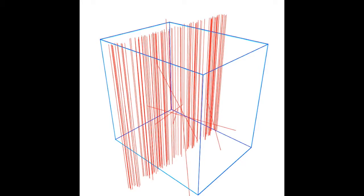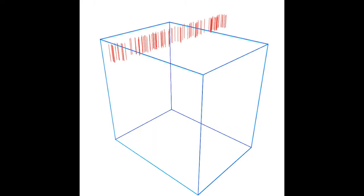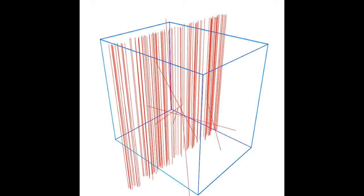This is a Monte Carlo simulation made in Gamos, showing 6mV photons passing through a tissue-simulating phantom.